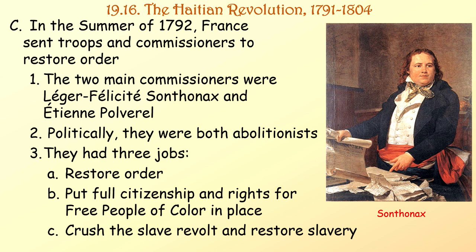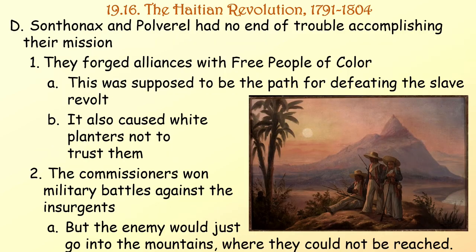The two main commissioners were Légère Félicité Santanax and Étienne Polverel — both abolitionists politically. They had three jobs: restore order, put full citizenship and rights for free people of color in place, and crush the slave revolt and restore slavery. Santanax and Polverel had no end of trouble. They forged alliances with free people of color, which was supposed to be the path to defeating the slave revolt but caused white planters not to trust them. The commissioners won military battles against the insurgents, but the enemy would just retreat into the mountains where they could not be reached.